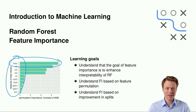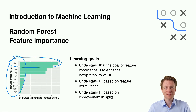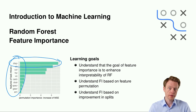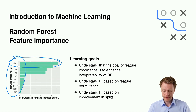At the end of this video you should understand what the goal of feature importance is — enhancing the interpretability of random forests. I will present two different methods: permutation feature importance and feature importance based on improvements in splits.